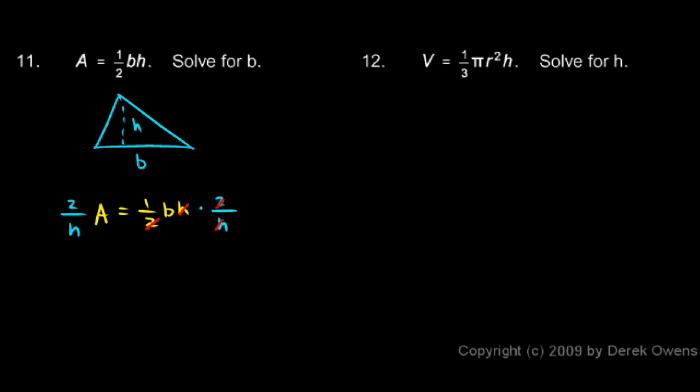Leaving me with b, which is what I need. So I have b is equal to all of this, and I'll write it like this, 2a over h.